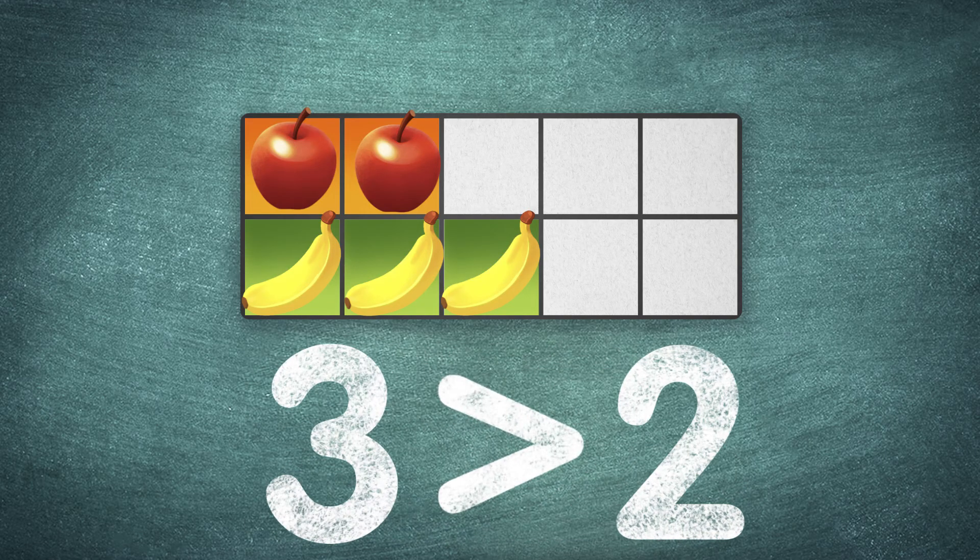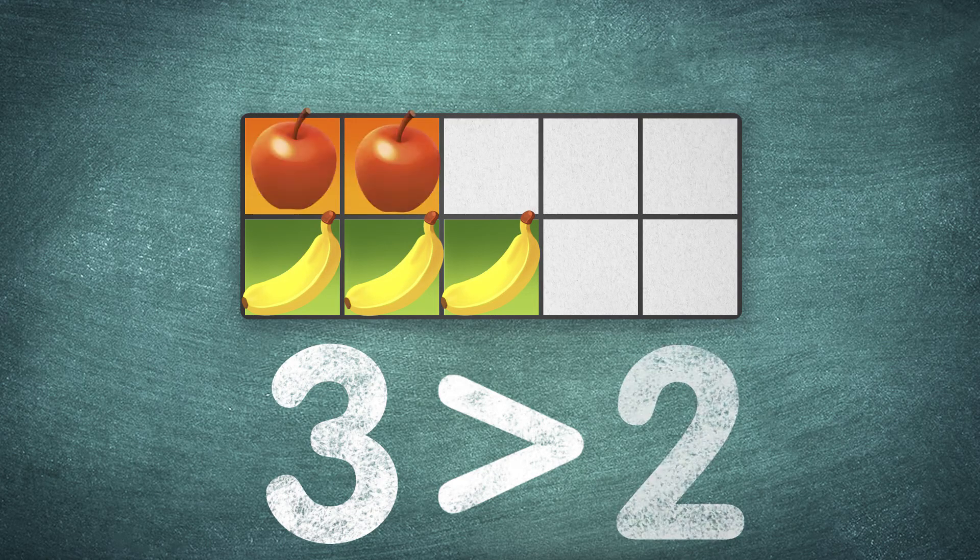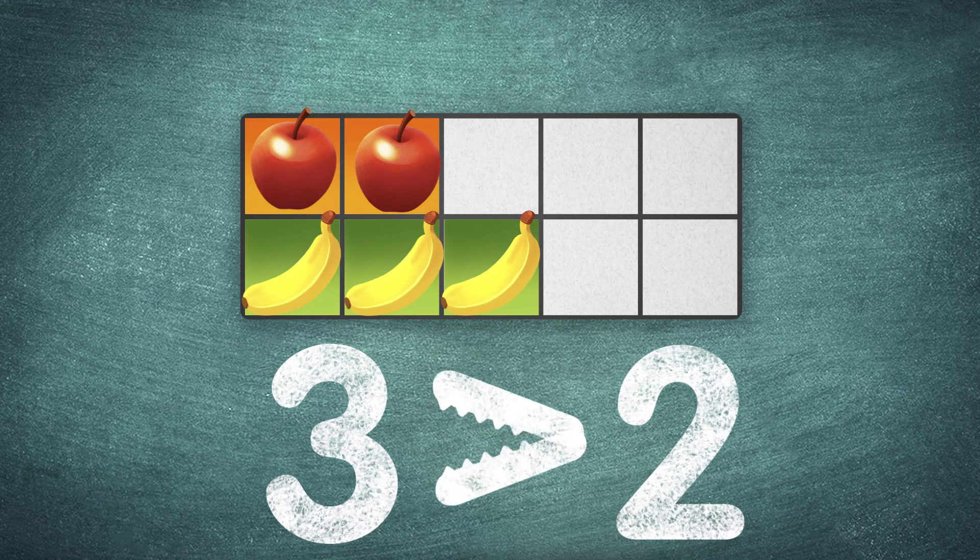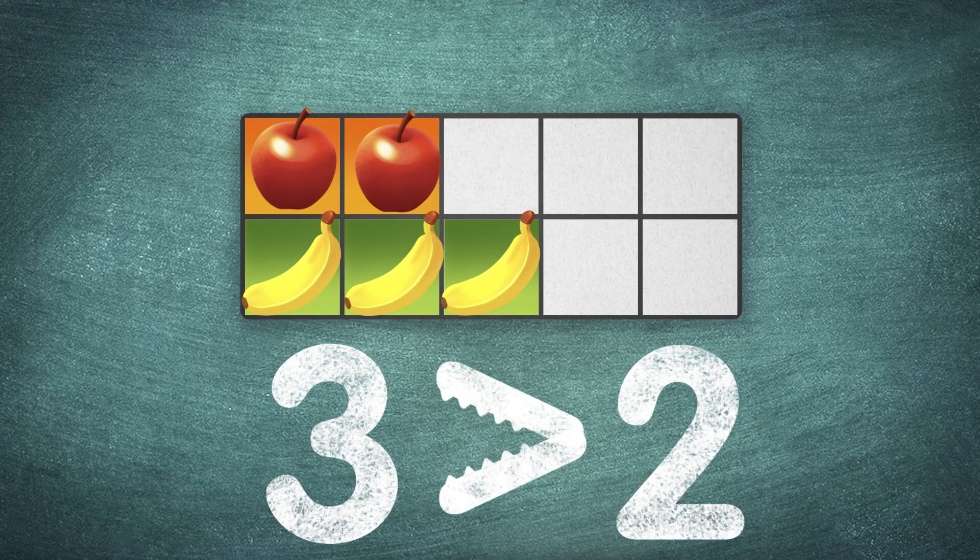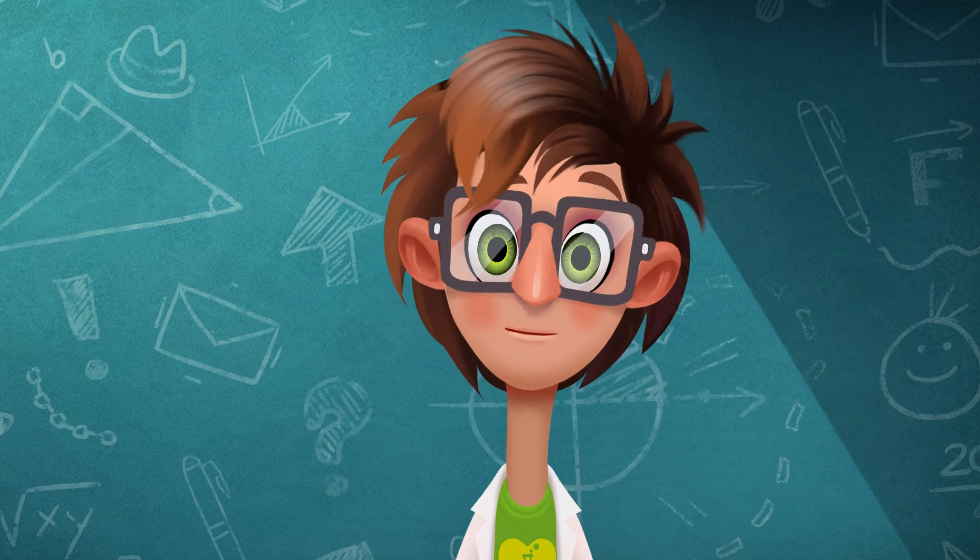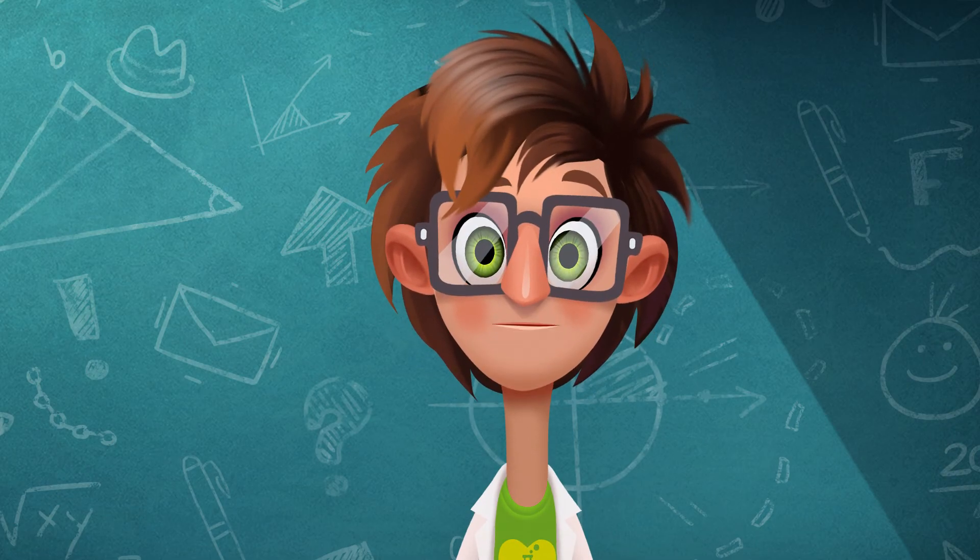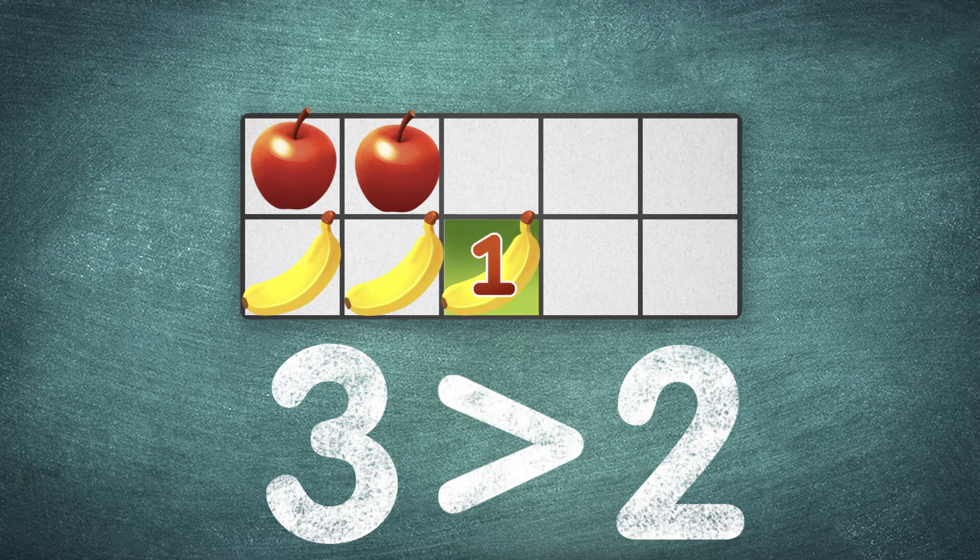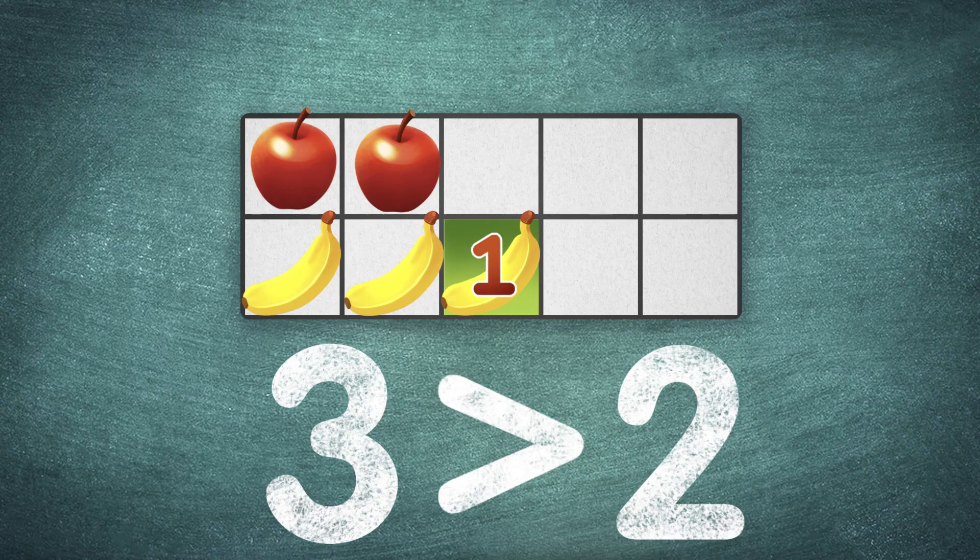And at the same time, the number of bananas is more than the number of apples. We can show this with the greater than sign. Doesn't this sign look like the mouth of a hungry crocodile that wants to eat as many things as possible? Now, let's figure out how many more bananas than apples there are. That's right. The answer here is also one. There is one more banana.